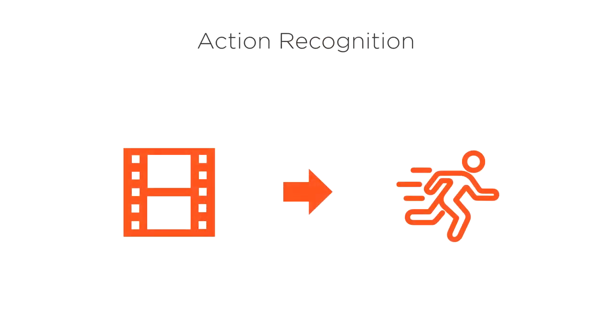Third, we have action recognition, also known as activity detection. Action recognition allows us to classify various actions occurring in a video. Essentially, it answers the question, what's happening in this video?